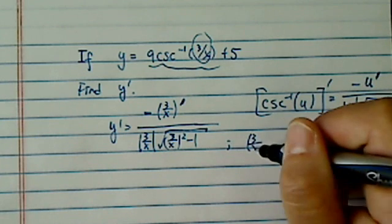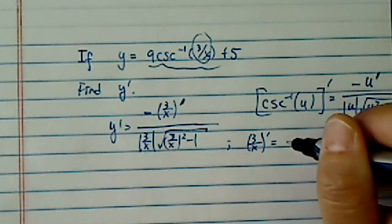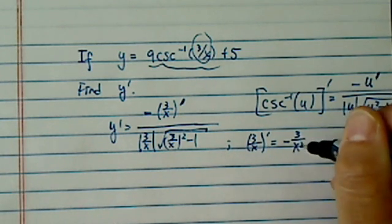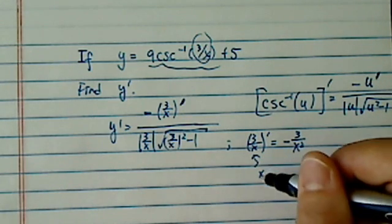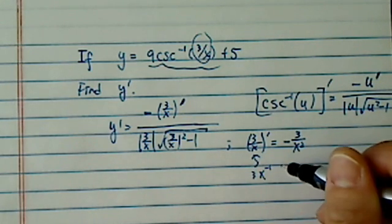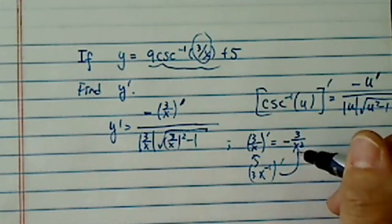Let's take the derivative on the side. 3 over x is equal to minus 3 over x squared. All I did is put x to the minus 1, take the derivative of this one, you'll get there.